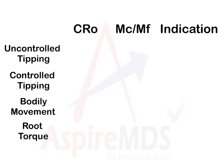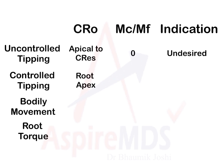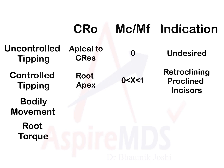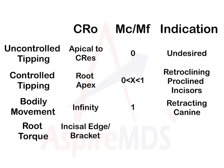To summarize: for uncontrolled tipping, the center of rotation is apical to the center of resistance, the moment of couple to moment of force ratio is 0, and this movement is considered undesired. For controlled tipping, the center of rotation is at the root apex, the ratio is more than 0 but less than 1, and it is indicated for retracting excessively proclined maxillary incisors. For bodily movement, the center of rotation is at infinity and the ratio is 1, required when retracting a canine into the extraction site. For root torque, the center of rotation is at the incisal edge or bracket, the ratio is more than 1, and it is required to procline retroclined incisors.